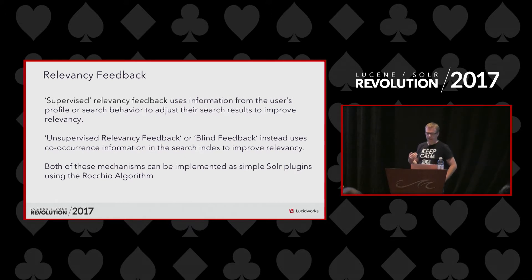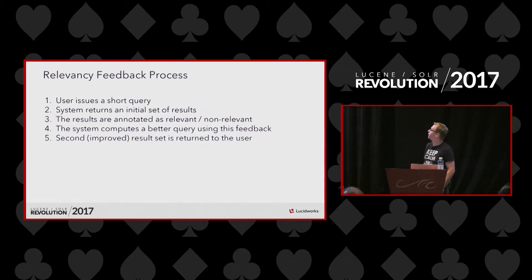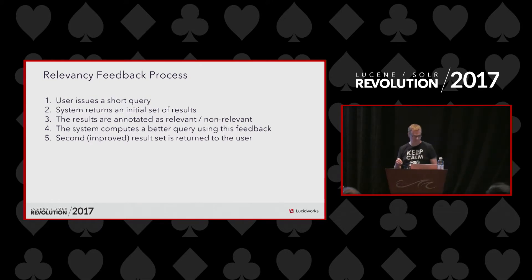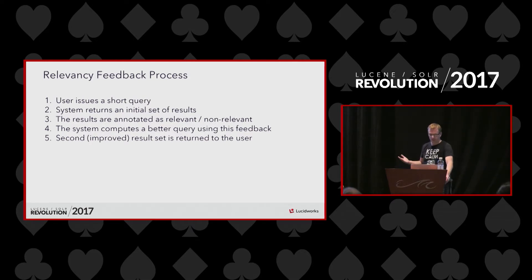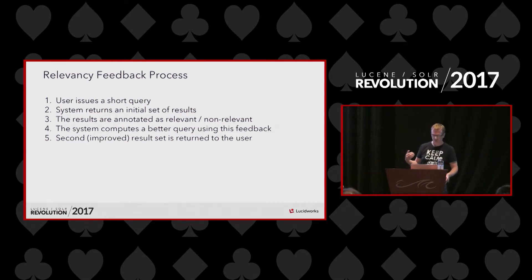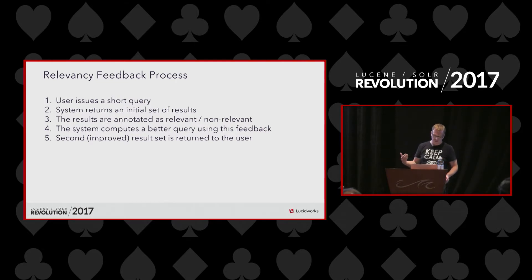Both of these mechanisms can be implemented quite easily as a simple Solr plugin using the Rocchio algorithm. The relevancy feedback process works like this: the user issues a short query, the system returns an initial set of results, the results are then annotated as to whether they are relevant or not — the annotation can be done by a human, using automatic methods, or using signals you have about the user. We then take those relevant documents and use them to create a better query by figuring out query expansion terms, and then that hopefully better query is re-executed to get better results.